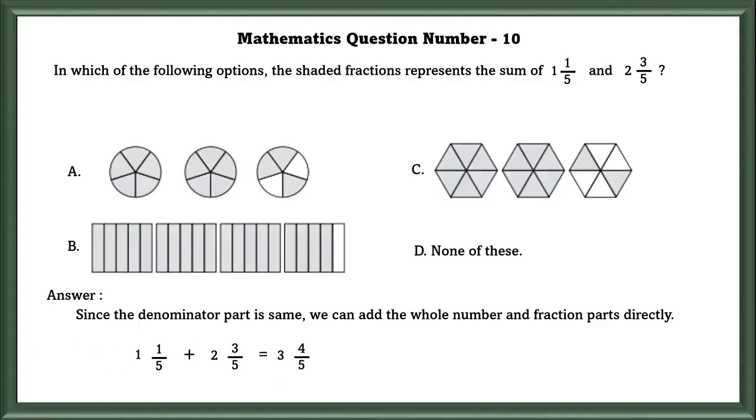If we add these two, we will get 3 and 4 by 5 and that is in the B option.